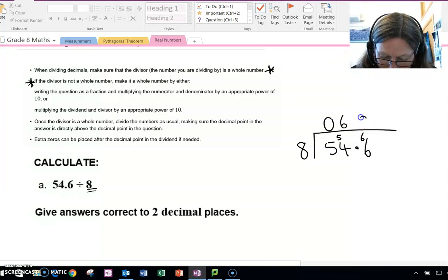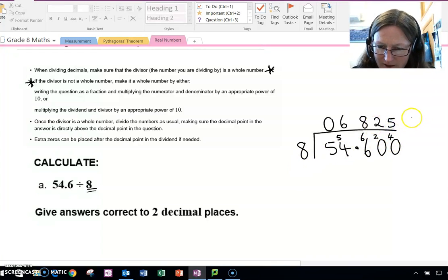That's 8. 8 times 8 is 64. So we put down a 0. We've got 2 to carry over from the 64, because we had 66. 8s into 20 is 2. 2 times 8 is 16. We put down another 0. We carry the 4 over, because this was 20, and 2 times 8 was 16, so we've got 4 to carry over. And 8s into 40. 5 times 8 is 40. So it finishes there.